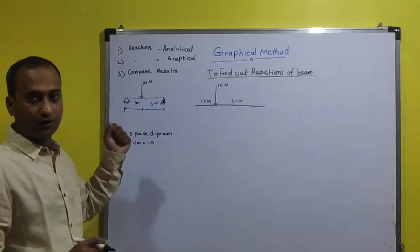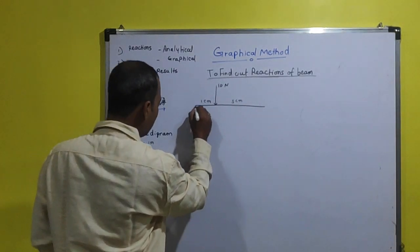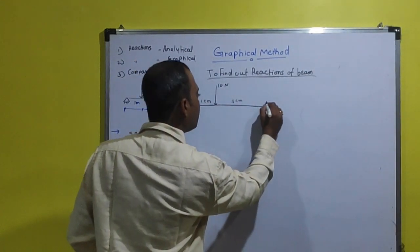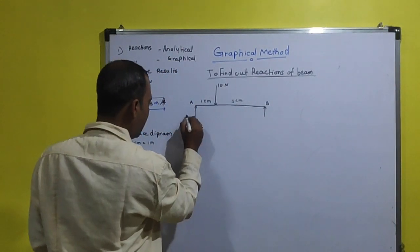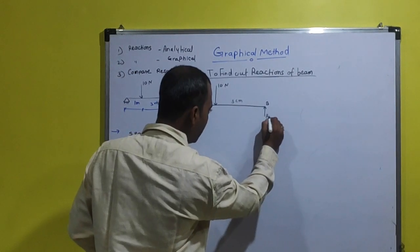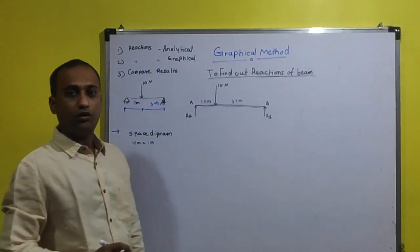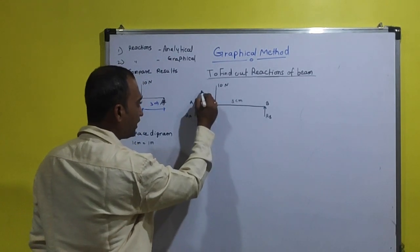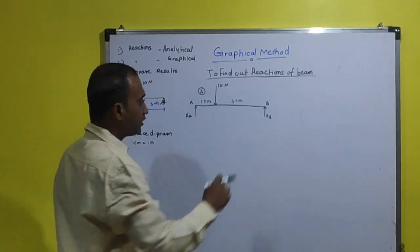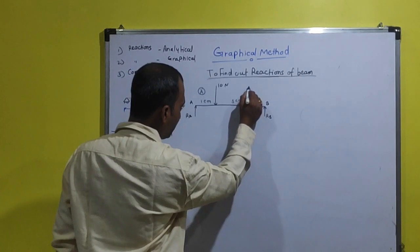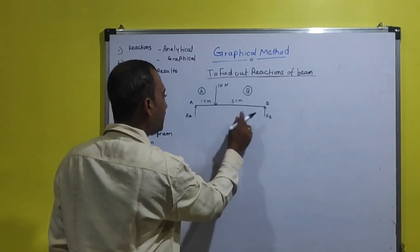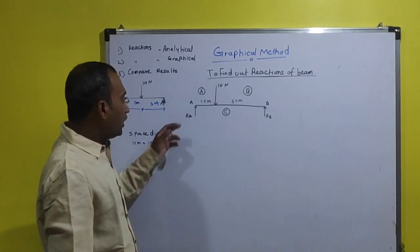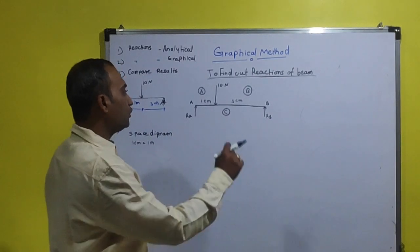This graphical method is only for the simply supported beam, so the reactions are in the upward direction. We name the points A and B, with reaction RA at point A and reaction RB at point B. We then name the spaces between the forces as per Bow's notation: the space between the 10 newton load and RA is A, between 10 newton and RB is B, and between RA and RB is C. Bow's notation helps us identify the forces.